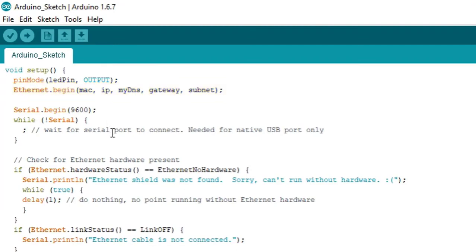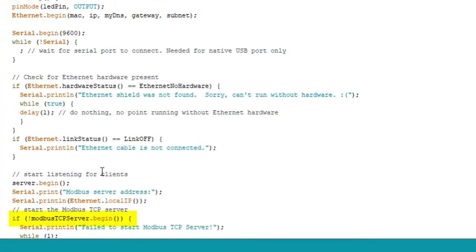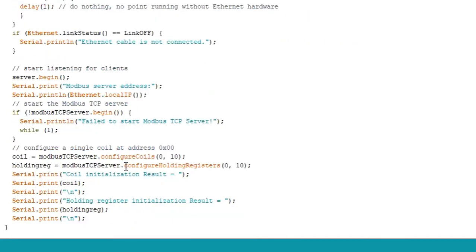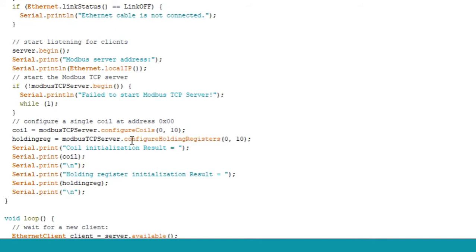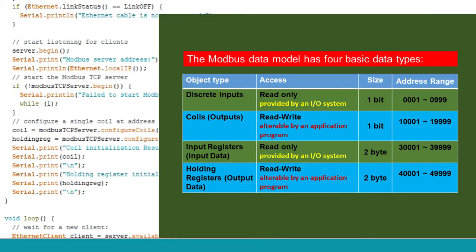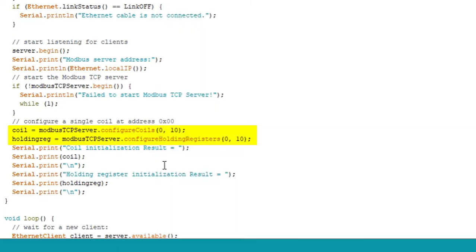The void setup function of this Arduino program initializes the Ethernet library with network configuration settings and Arduino starts to communicate physically with the PC. Once the physical network is established, the Modbus TCP server is also initiated and becomes ready to connect with any SCADA program as a client. In Modbus communication protocol, the data transfer functions offer some memory registers to configure, monitor, and control Arduino input-output devices from the SCADA interface. The Modbus data model has four basic data types: discrete inputs, coils, input registers, and holding registers. In the Arduino program, I have created holding registers for storing the temperature sensor value and coil registers for storing digital output data.